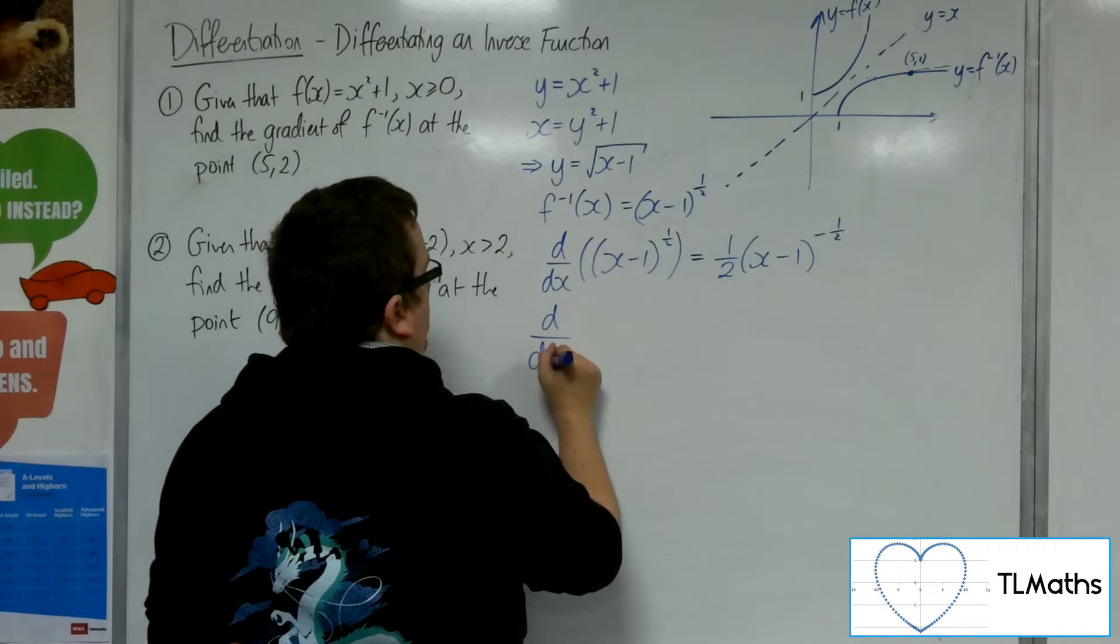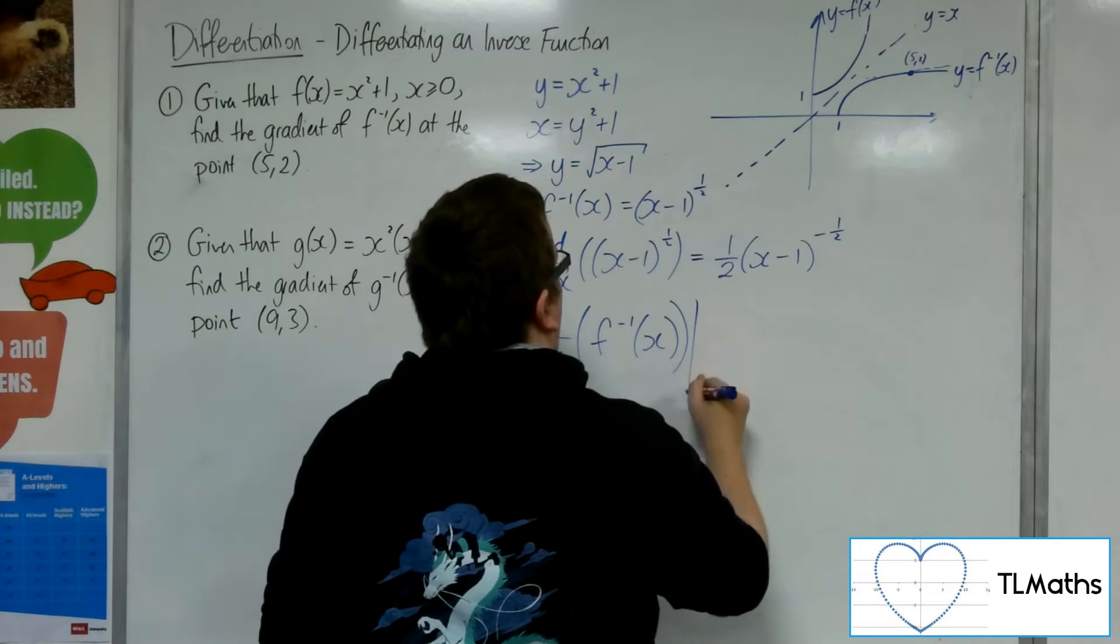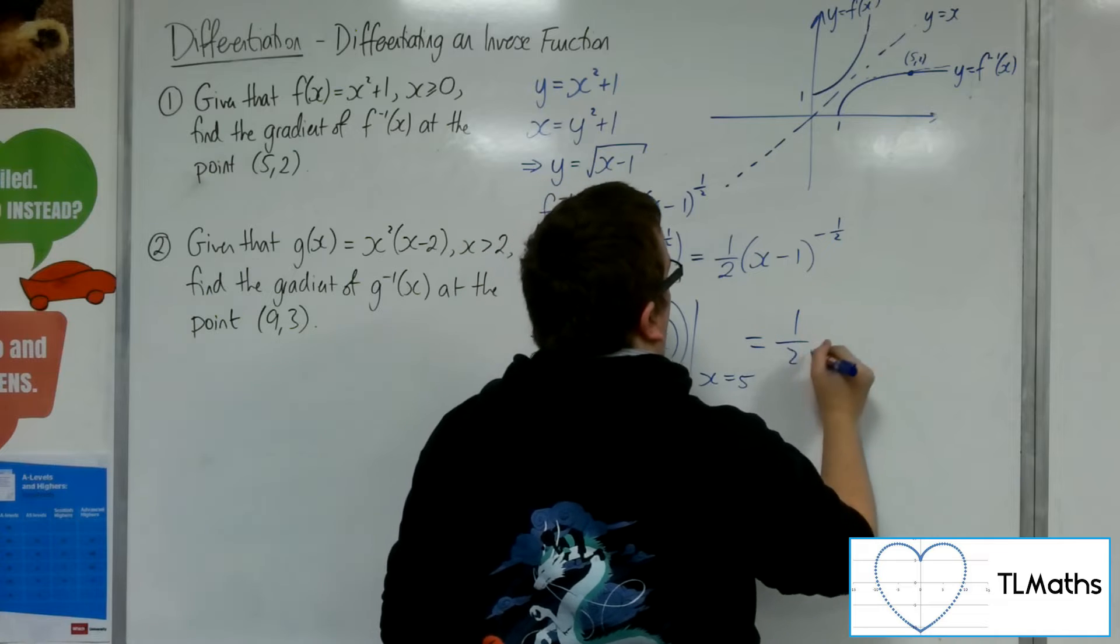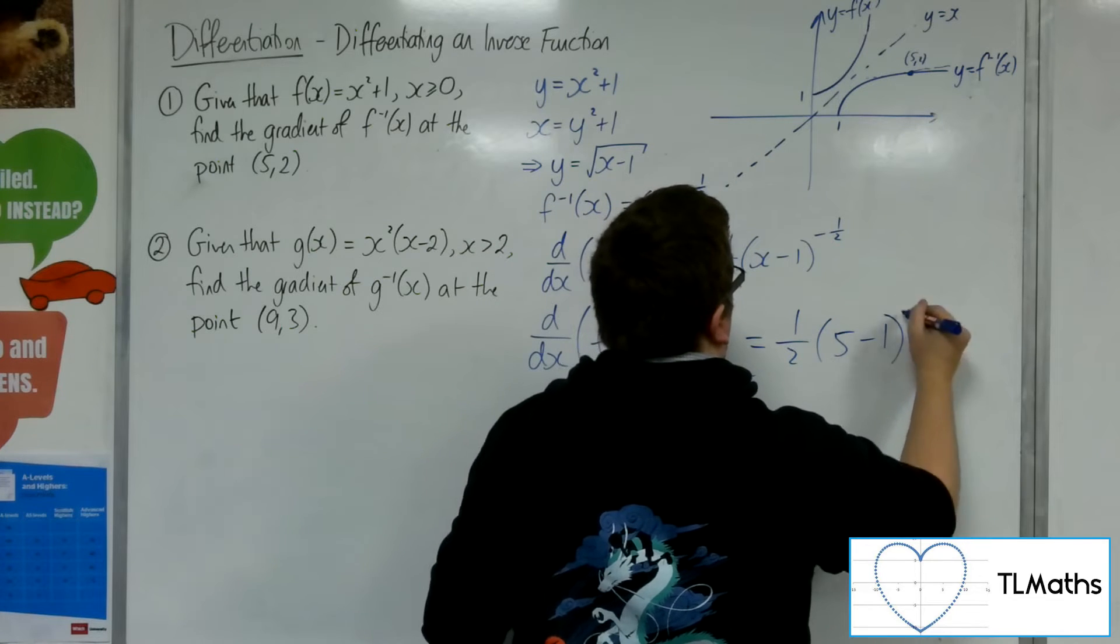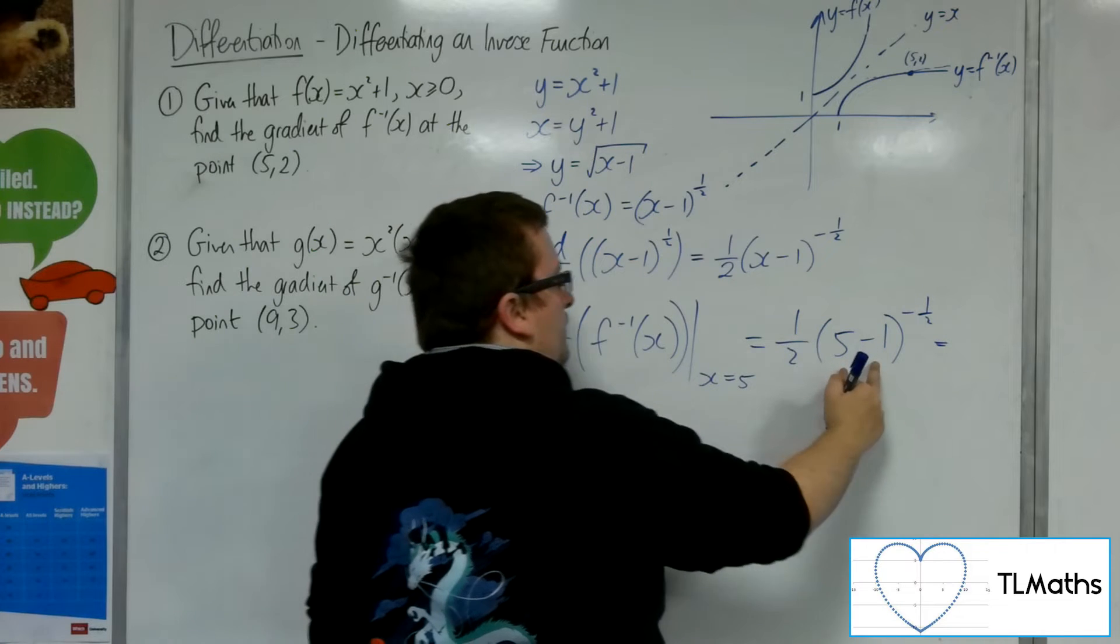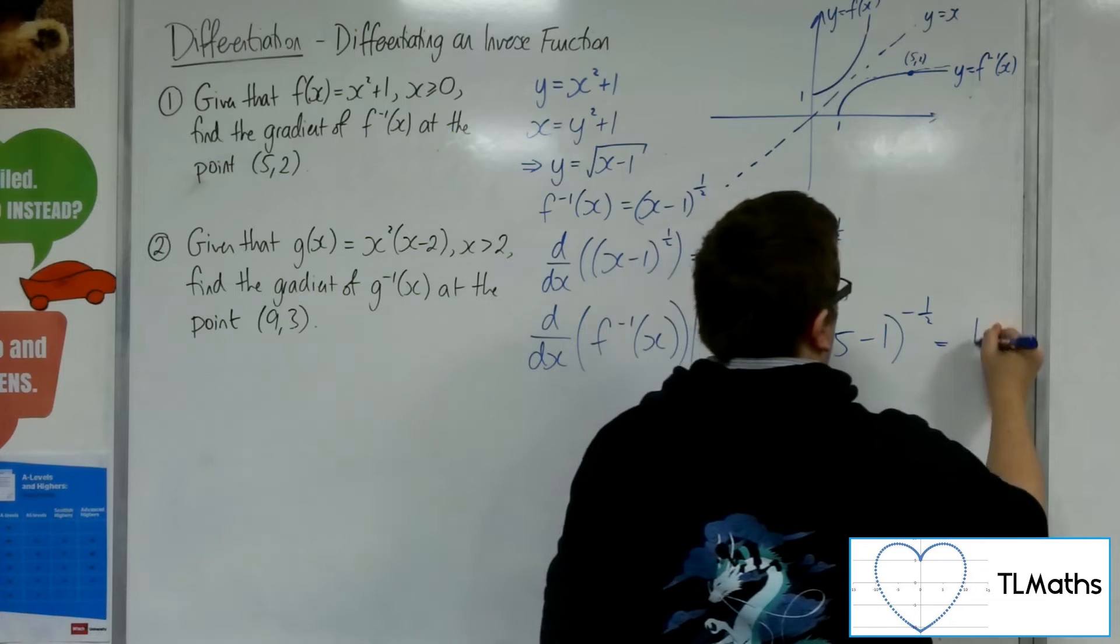So the derivative, so evaluated at x equals 5, would be 1 half of (5 take away 1) to the minus 1 half. Now 5 take away 1 is 4. 4 to the half is 2, so that would be 1 over 2 times 1 over 2, so that's a quarter.